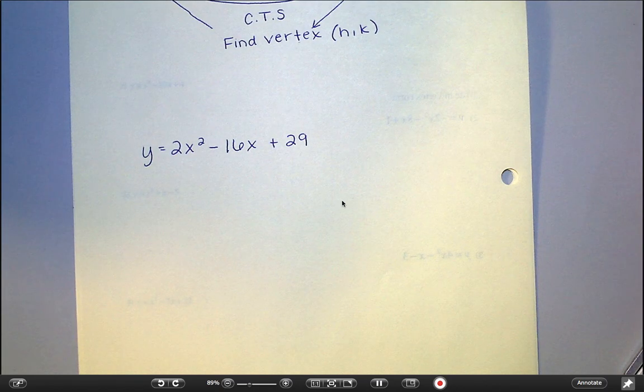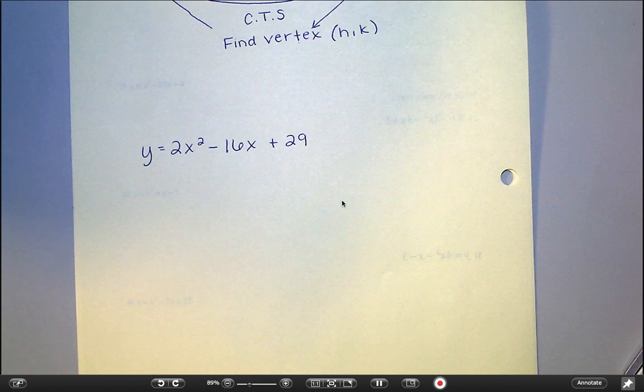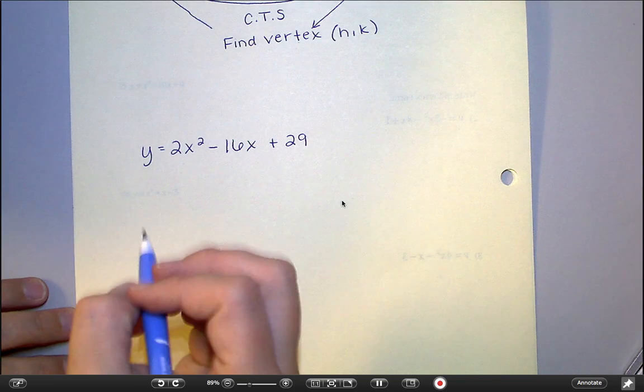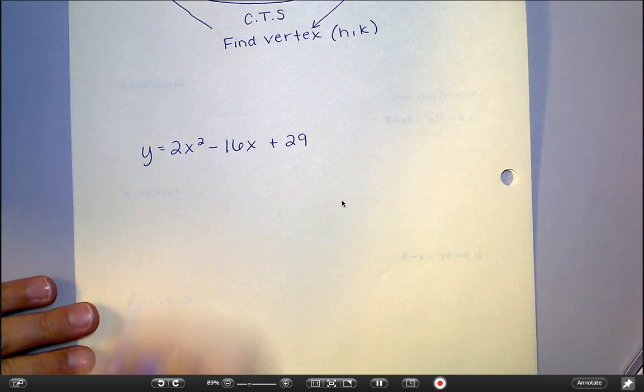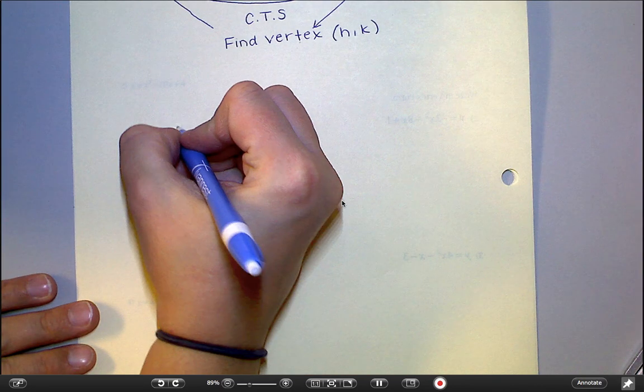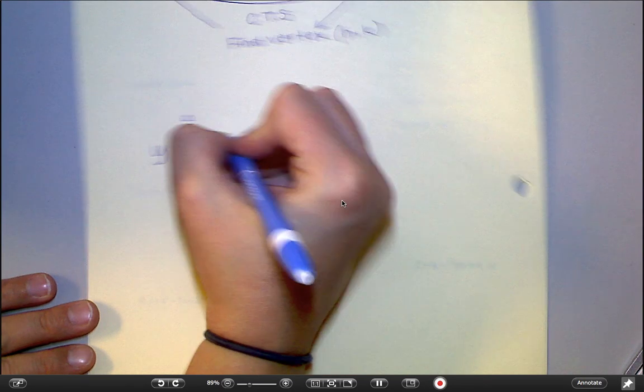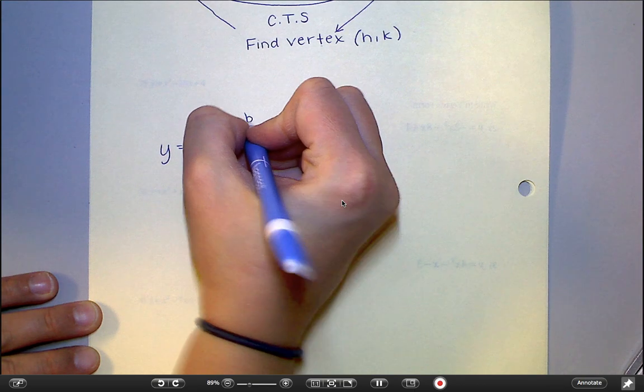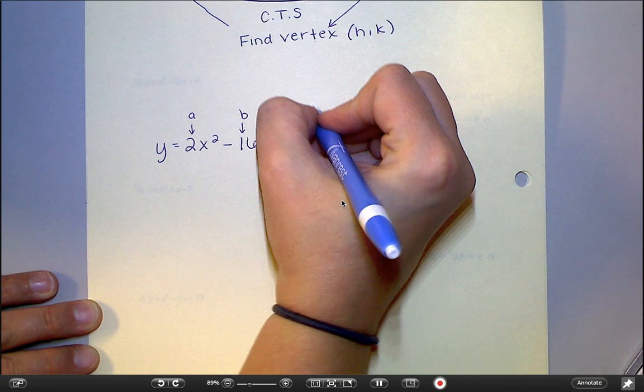And I know that I need to find h and I need to find k. So I'm going to start with finding h. And I guess before I do that, I should make sure we understand that this is in standard form. So this is my a, this is my b, and this is my c.